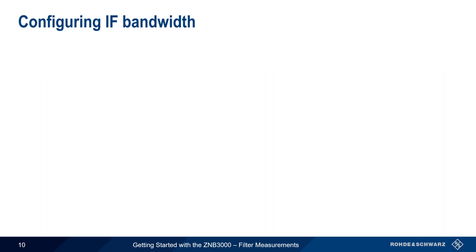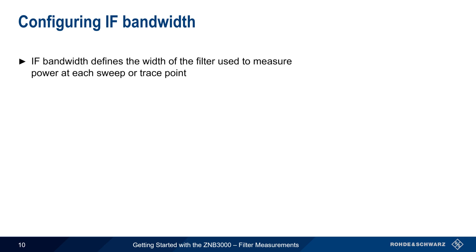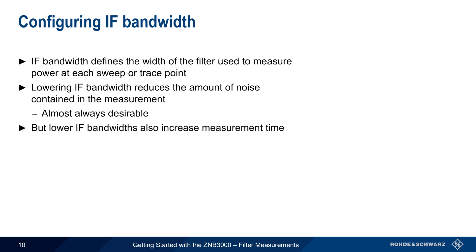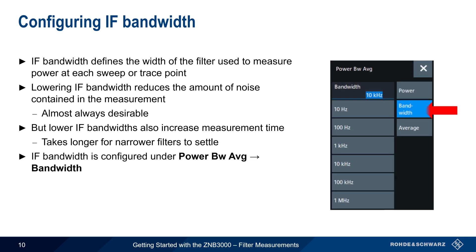IF bandwidth also impacts sweep time. IF bandwidth defines the width of the filter used to measure power at each discrete sweep or trace point. Since narrower filters allow in less noise than wider filters, lowering the IF bandwidth will reduce the amount of noise contained in a measurement, and this is almost always desirable. However, using a lower IF bandwidth will also increase overall sweep or measurement time, since it takes longer for a narrower filter to settle and obtain a stable power reading. On the ZMB3000, IF bandwidth is configured by pressing the Power Bandwidth Average button and then selecting Bandwidth.